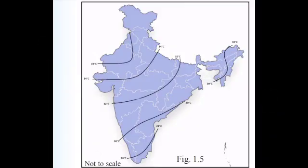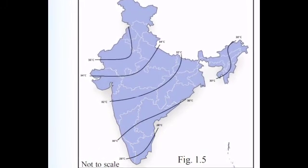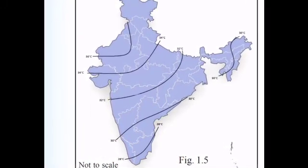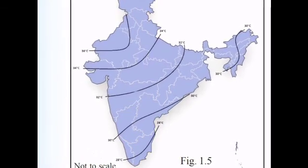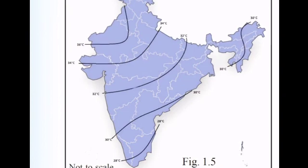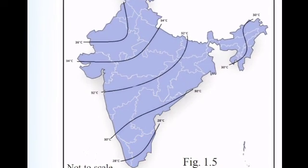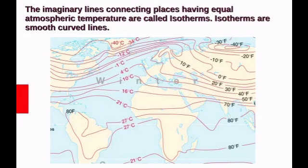Look at the map. You can see smooth curved lines connecting the places having equal temperature. The imaginary lines connecting places having equal atmospheric temperature are called isotherms.